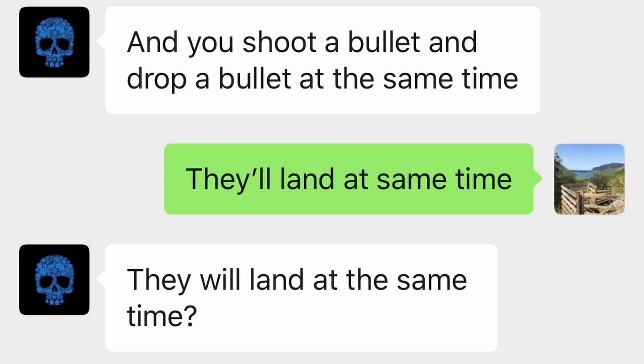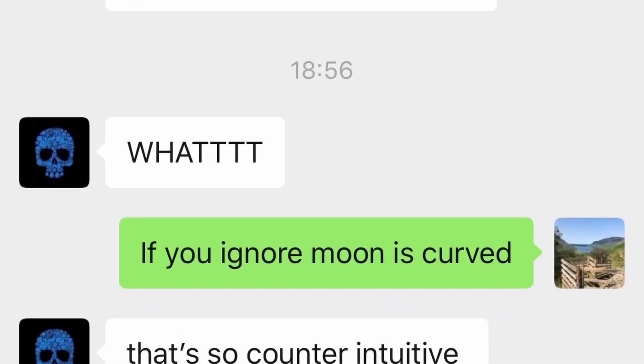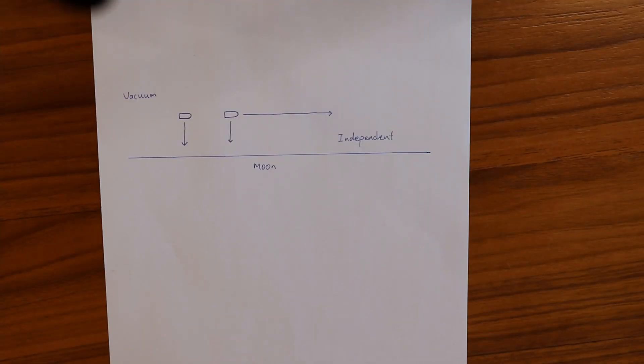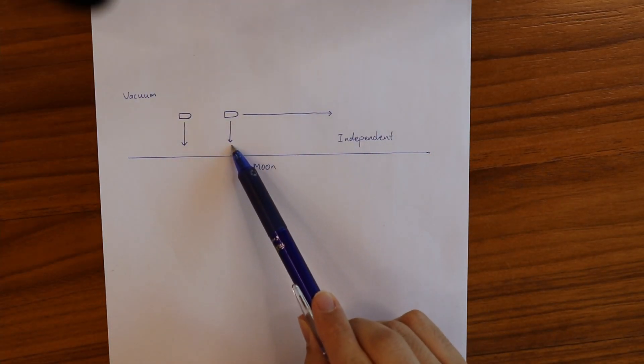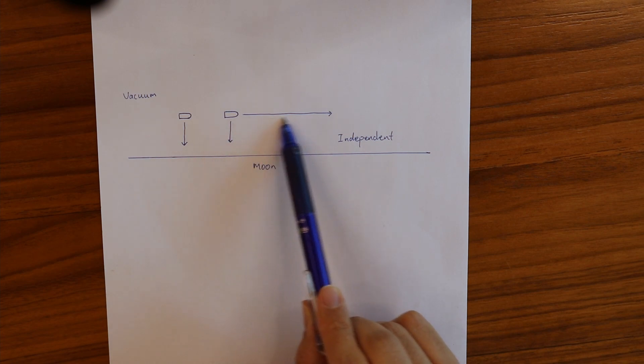I confirmed that this is indeed a true fact if we ignore the curvature of the moon, after which he was completely astounded. This is because in a vacuum, vertical velocity is completely independent from the horizontal velocity.